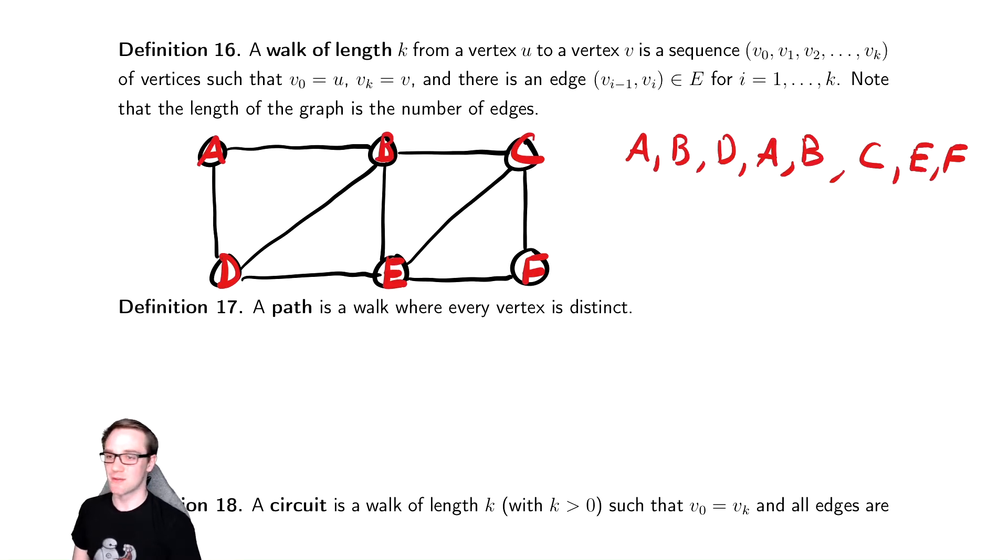Notice it doesn't matter that I revisited vertices or anything like that. All that matters is that there are edges connecting them. There's edge between A, B, there's an edge between B, D, there's an edge between D and A, there's an edge between A and B, and so on and so on and so on. It's just a way to move around the graph. Very intuitive.